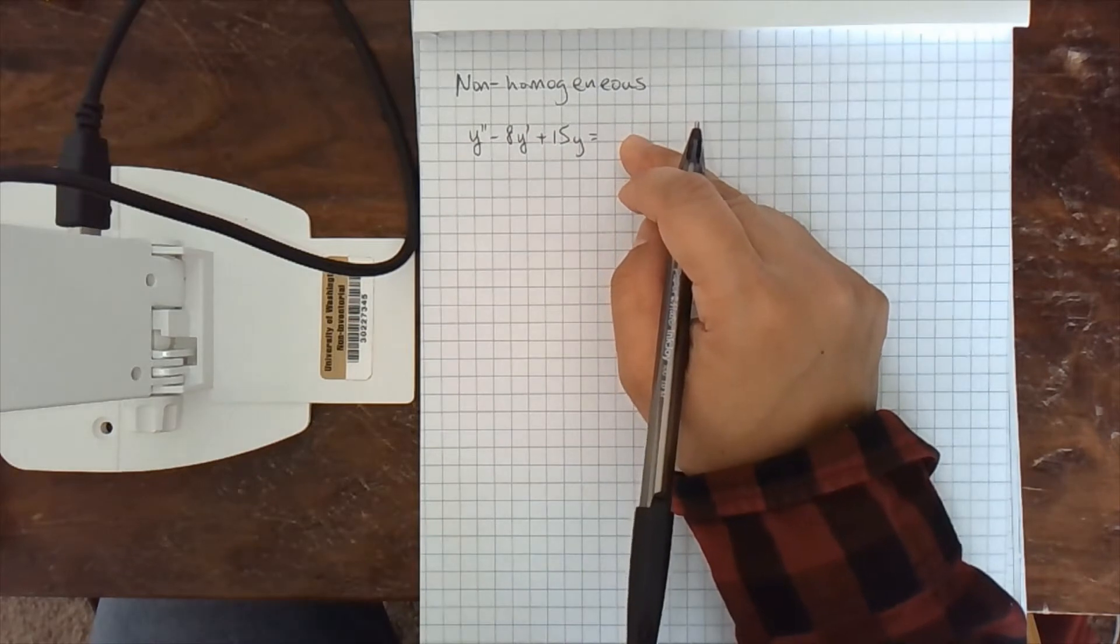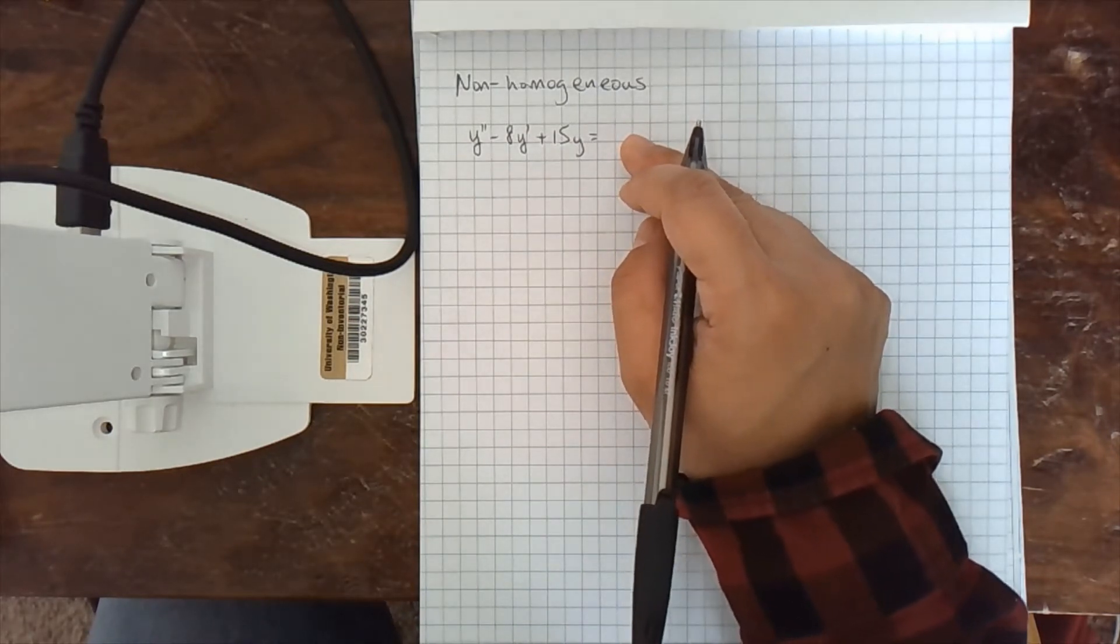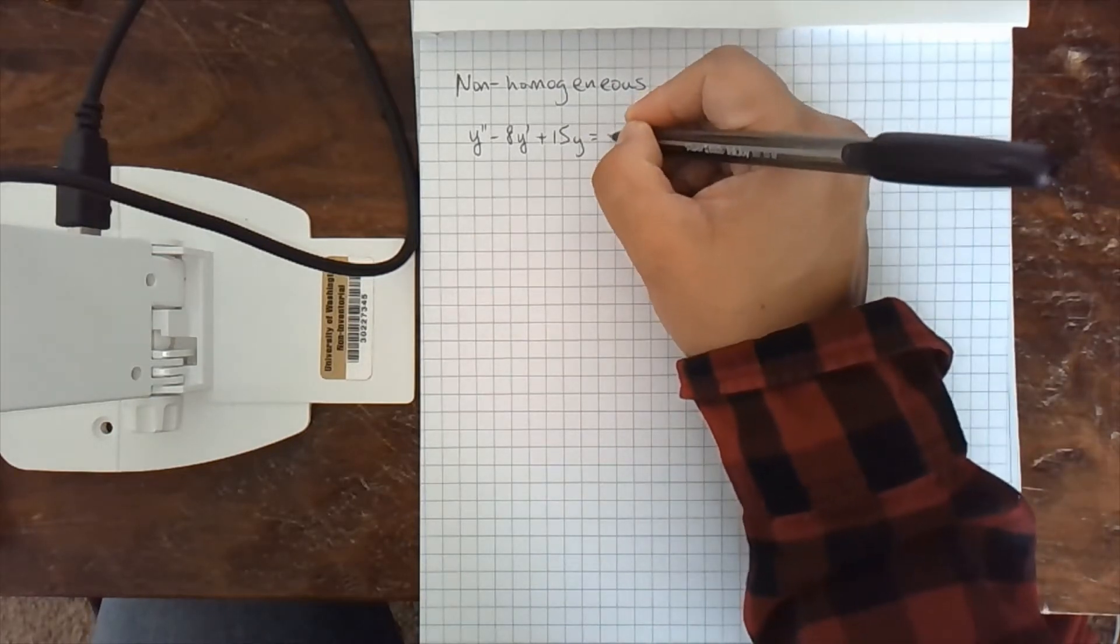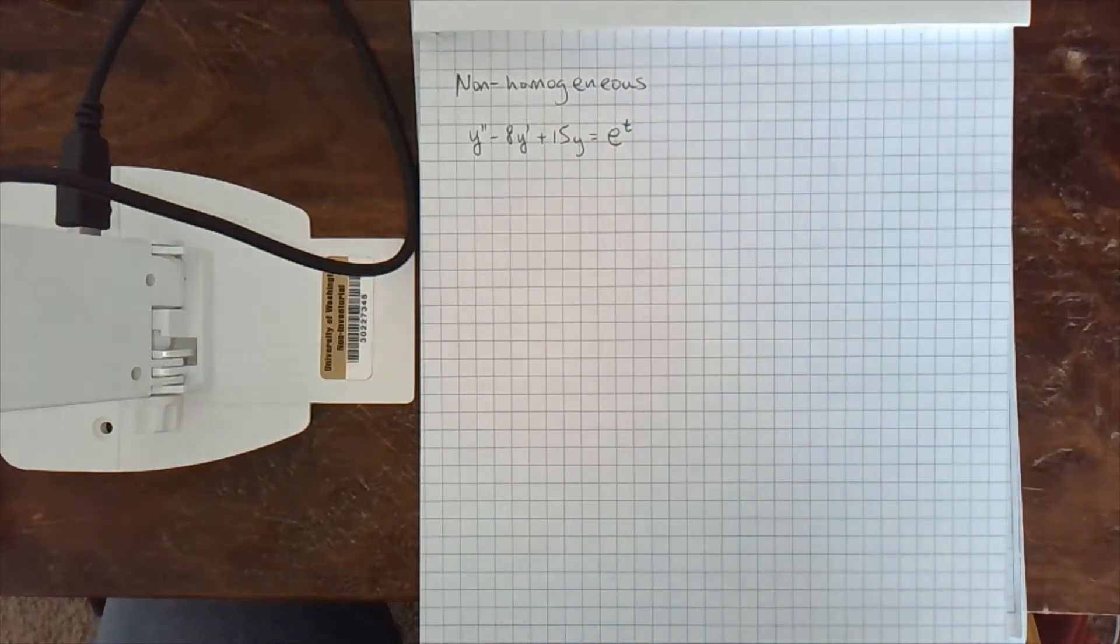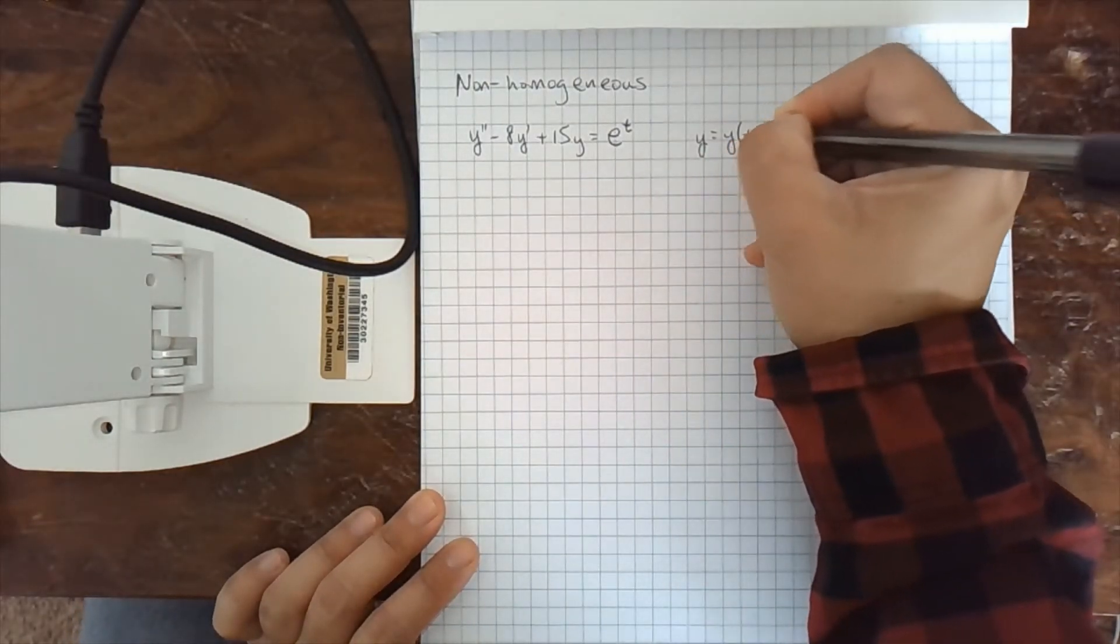So we'll start with this equation. We had it equal zero. This was the first second order linear homogeneous differential equation with constant coefficients we solved. But now I'm just going to put a function over here. I'm going to put e to the t. And y is still a function of t.